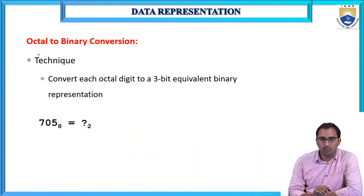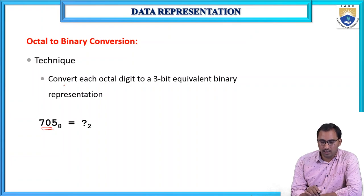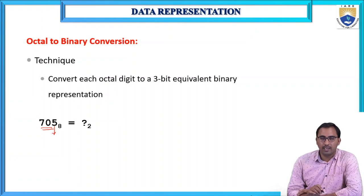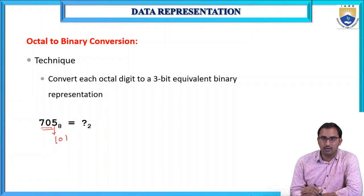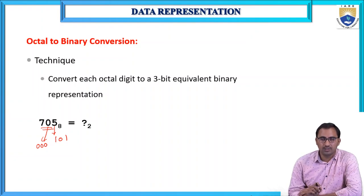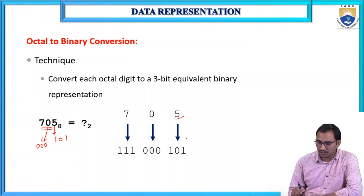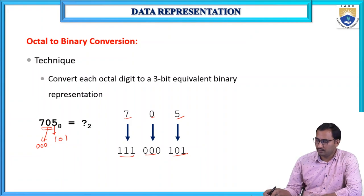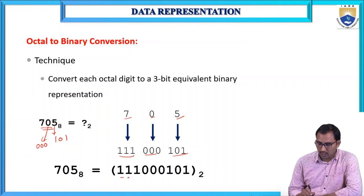For octal to binary conversion, the technique is to convert each octal digit to a 3-bit binary equivalent. For example, 5 in octal is represented as 101 in binary, 0 as 000, and 7 as 111. So every digit in the octal number system is represented with a 3-bit binary number. This is the binary equivalent of the given octal number.